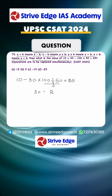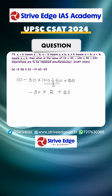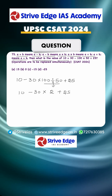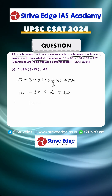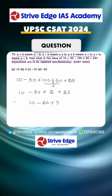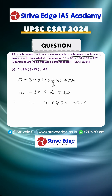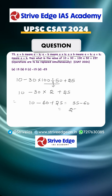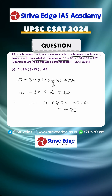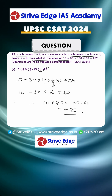So we can write 30 into 2 plus 25, which is 60, giving us 10 minus 60 plus 25. That becomes 25 minus 60, so the value is negative 35. Wait — 25 minus 60 gives minus 35, so the answer is option B.